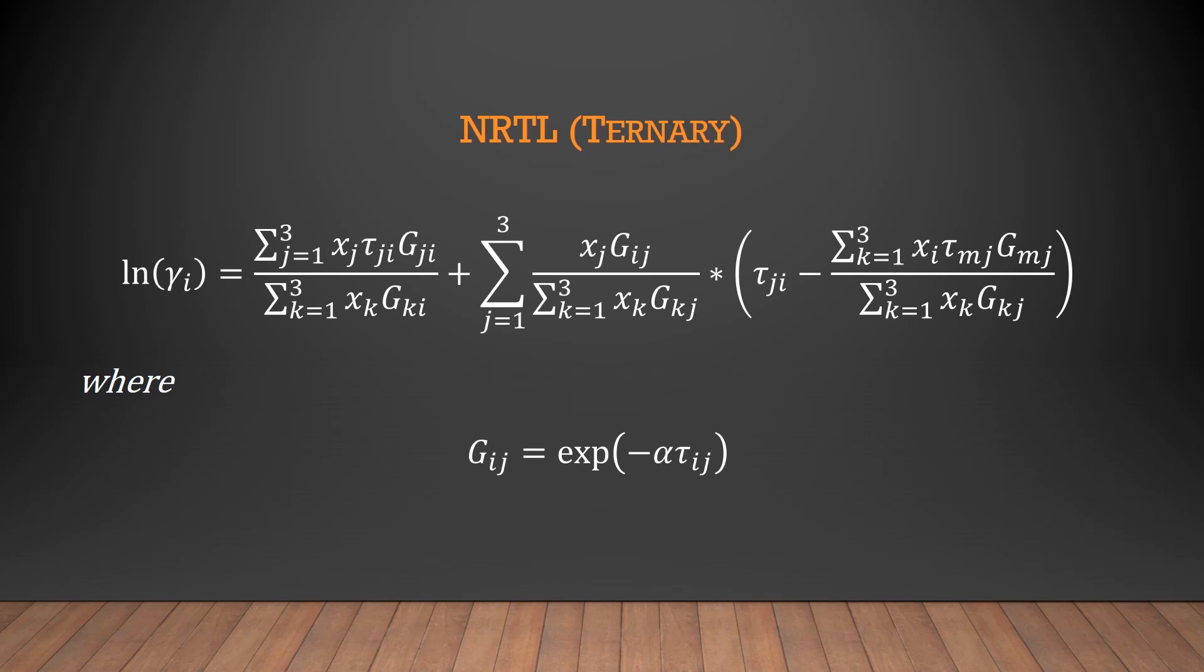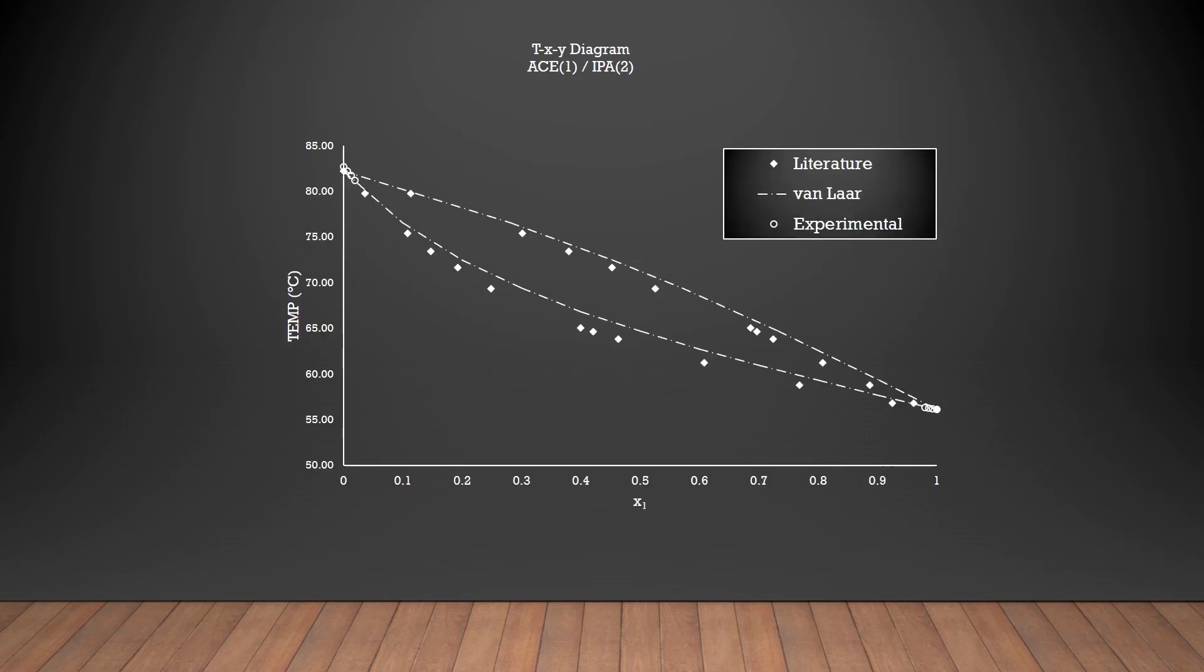So what do we do with all the equations for the models? Well, the data is transformed with TXY plots that model the system, whether that be a binary or ternary system. Here we see a plot of the binary system of acetone and isopropyl alcohol using the Van Laar model. These plots are useful in many aspects of chemical engineering and provide lots of information of the equilibrium of the binary or ternary system. And that's all you need to know about the theory behind the vapor-liquid equilibrium. Let's see if we can find Matt for a quick interview before he heads into the lab.